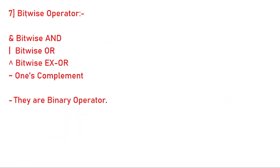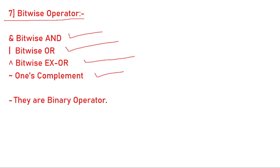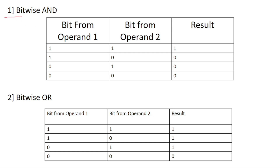Next is the bitwise operator. There are four types: bitwise AND, bitwise OR, bitwise XOR, and one's complement. These are the symbols for each type of bitwise operator. They are binary operators.